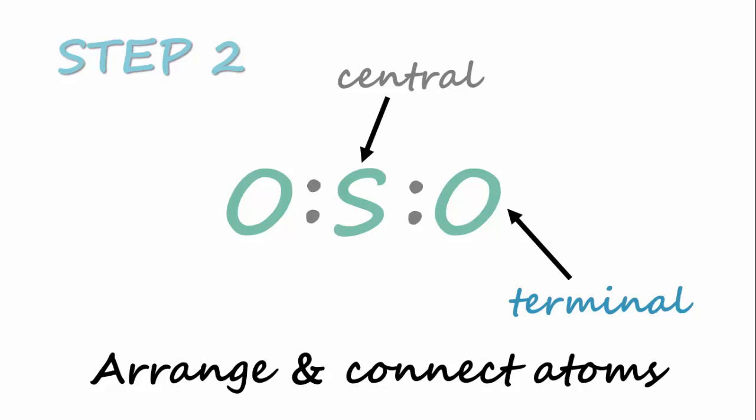So how do you know which atom to place in the center? Normally, you'll place the least electronegative atom in the center. However, if there is carbon in your molecule, you'll want to place that in the center. Basically, you want to place the atom that can make the most bonds in the center.